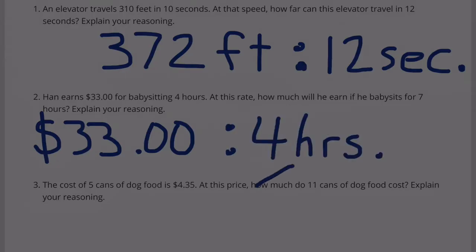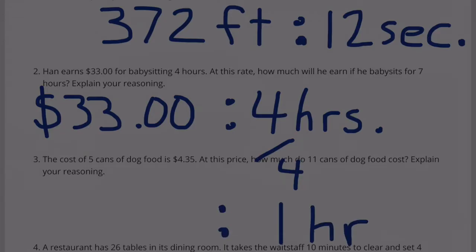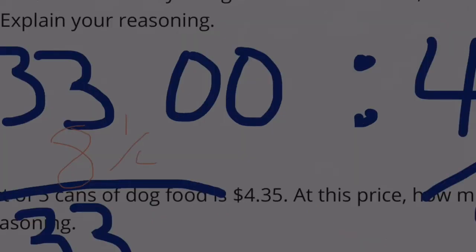$33 every 4 hours. I'm going to divide 4 by 4 to make 1 hour, and I have to divide 33 by 4. 4 goes into 33 eight times. 8 times 4 is 32. 33 minus 32 is 1, so we have 1 fourth, 8 and 1 fourth. When you're talking about money, that's the same as $8 and 1 quarter, so $8.25 per hour.